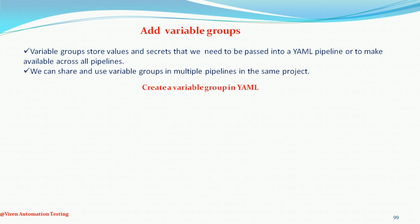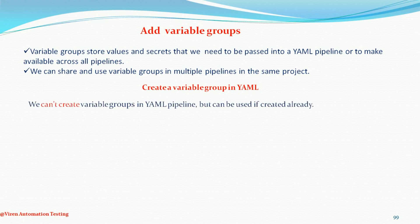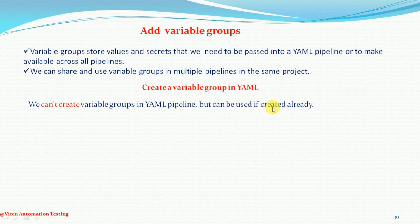Now, creating a variable group in YAML pipelines — we should know that we cannot create a variable group through the YAML pipeline format or through YAML scripting. If you want to create a variable group, you need to create it through the classic editor format. Once the variable group is created outside, it can be used within the YAML pipelines. We need to create the variable group first, and then only we can use that variable group and its key-value pairs in the YAML pipeline format.